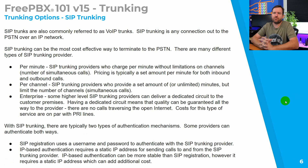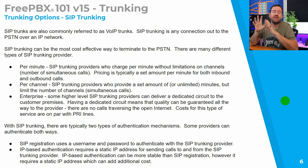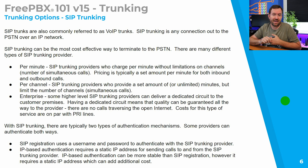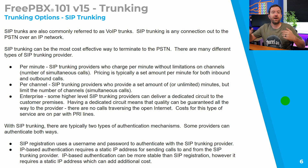SIP trunking, also known as VoIP trunks, is basically any connection out to the public switched telephone network over an IP network. SIP trunking can be the most cost-effective way to connect to the PSTN. There are many different types of providers. First, you have per-minute or metered providers — companies like ClearlyIP, VoIP.ms, and Twilio. With metered trunking you pay per minute for usage but are not limited to a certain number of concurrent calls — whether you have one call or a hundred, you just pay per minute.